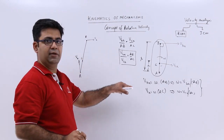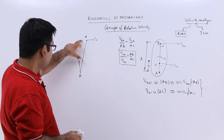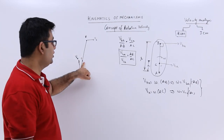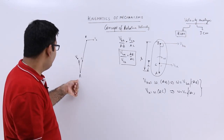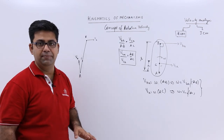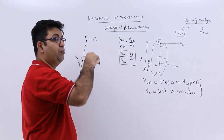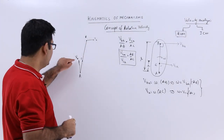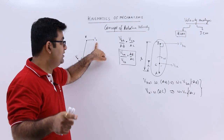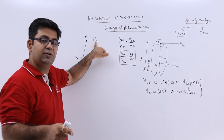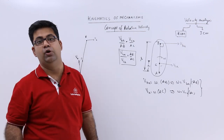Taking this concept forward to a specific example: we have link AB with another point C on it. The velocity of point A is known — it's in a vertically upward direction with magnitude VA. VB is the velocity of point B, whose direction is known. Note that these velocities are not with respect to each other — they are with respect to a fixed point O.